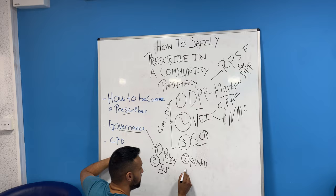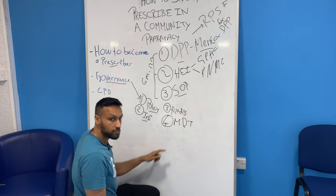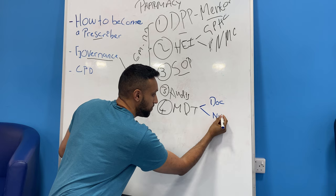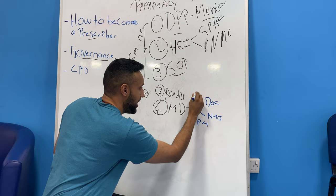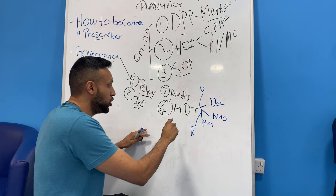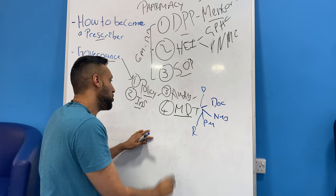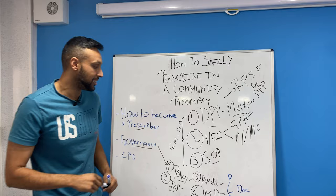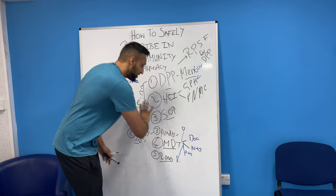You also need to be part of a multidisciplinary team. Think about general practice — there are various doctors, nurses, a practice manager, receptionist, and dispensary. They don't work alone. I'm not saying you need doctors and nurses, but you want to be part of an MDT so you can conduct audits, have your policy and insurance in place, and hold regular practice meetings where you discuss cases, what's gone well, and what hasn't.